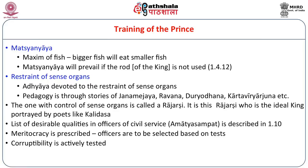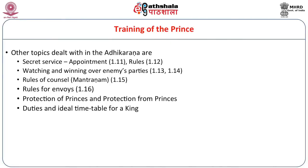Other topics include desirable qualities in officers of the civil service, with meritocracy prescribed rather than appointment based on relationships. One interesting topic is that corruptibility is actively tested. Other topics dealt with include secret service, watching over and winning over enemy parties, rules of council (Mantranam), rules for envoys and ambassadors, protection of princes, and protection from princes. Princes are seen as a danger to the king, and history bears this out — many kings have been killed by their own sons.